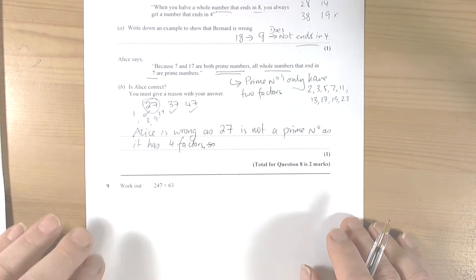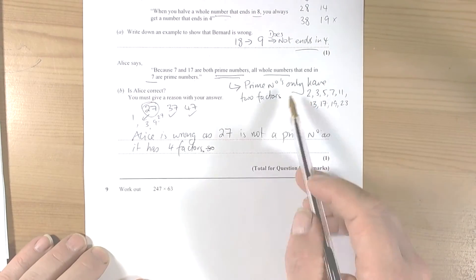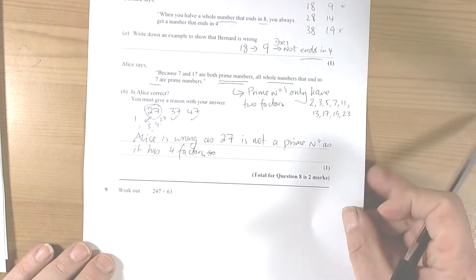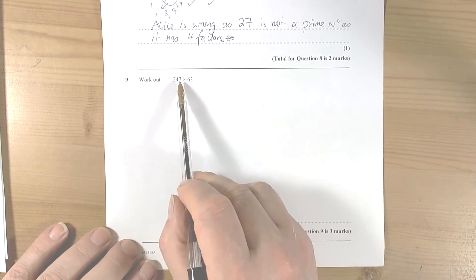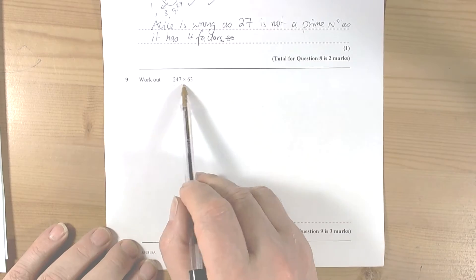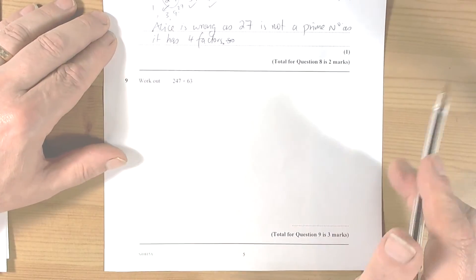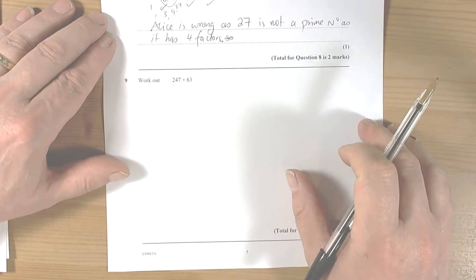Okay, so again we've given reasons and we thought about what prime numbers are. So question 9, it asks us to do a calculation, a long multiplication calculation. There's a whole realm of methods for doing these.